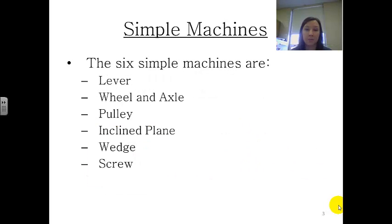So what are the simple machines? There are six simple machines known as a lever, a wheel and axle, a pulley, an inclined plane, a wedge, and a screw.